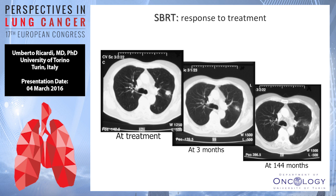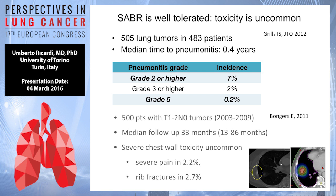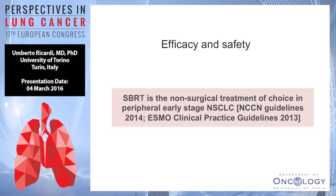The most typical radiological pattern of treatment response shows that, compared to lobectomy, you have fibrotic evolution of the lung volume receiving high radiation doses. Despite some late radiological findings of fibrosis, the treatment is quite safe clinically: the risk of severe symptomatic pneumonitis is very low — in the range of 2–3 percent — and severe chest wall toxicity, including neuropathic pain for tumors close to the chest wall, is also very low. For these reasons, ESMO and NCCN guidelines confirm SBRT as the non-surgical treatment of choice for peripherally located early-stage non-small cell lung tumors.